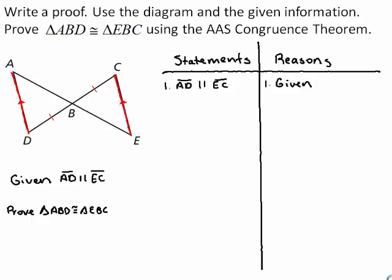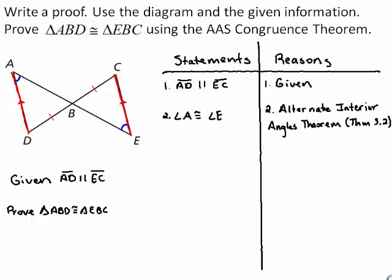Line segment AD is parallel to line segment EC because this was given information. Angle A is congruent to angle E by the alternate interior angles theorem because, looking at the diagram, angle A and angle E are alternate interior angles — they lie on opposite sides of the transversal and inside the parallel lines.